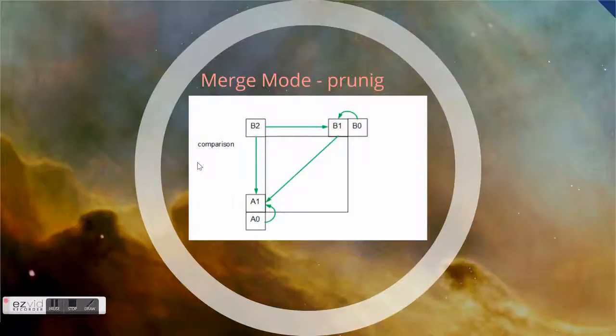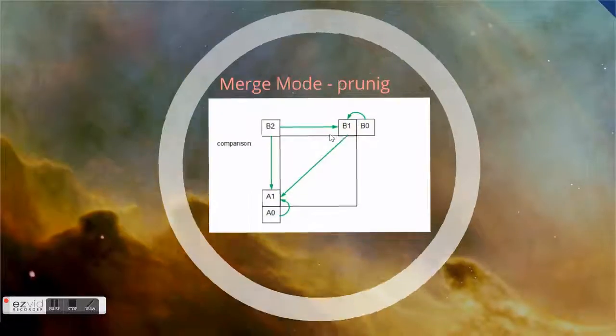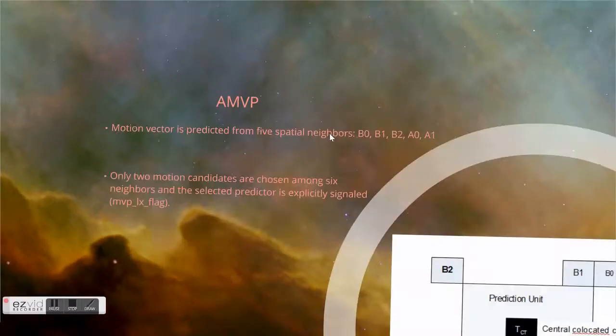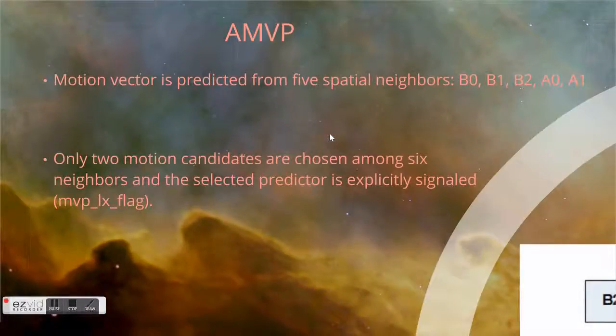If one of them is not available or we've not found the best one, we're still taking the 5 motion vectors in the queue. And then we're just using 0,0 or the motion vector which was the best predicted from 1 of 5. As I said, the prediction from 5 is partial neighborhood. And only 2 motion candidates are chosen from 5.